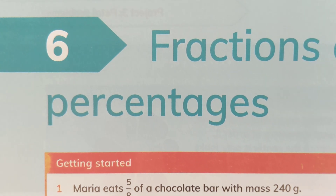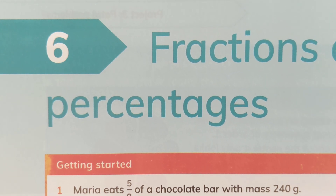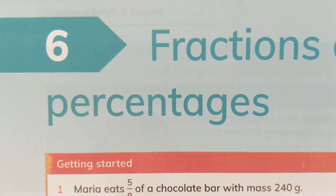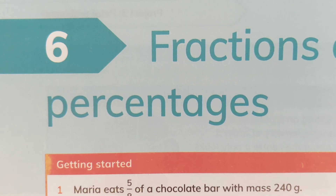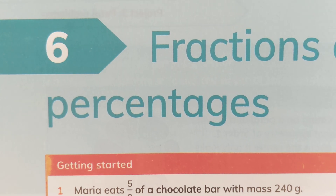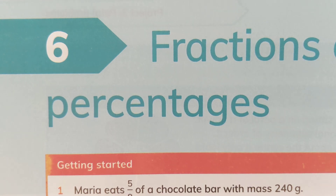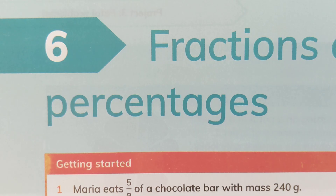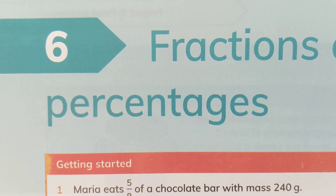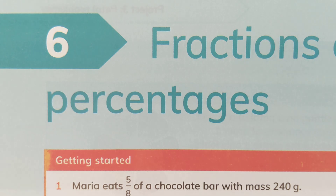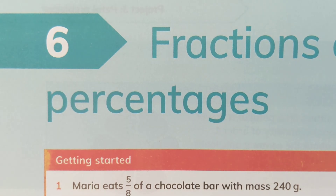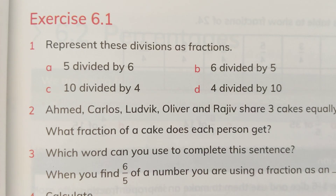Bismillahirrahmanirrahim. As-salamu alaykum dear students, how are you? I hope you'll be fine. This is Cambridge Primary Mathematics Textbook 6, and today we are starting with chapter number six, which is related to fractions and percentages. We have already done these types of questions earlier, especially in grade five, so this is not a new topic for you. We are going to discuss Exercise 6.1.